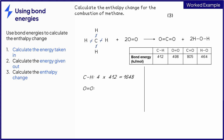The equation indicates there are two molecules of oxygen, so there are two oxygen-oxygen double bonds. Multiply this number by the bond energy in the table, 498, to give you 996. Add these values together to find the total energy required to break the bonds. This gives you a total value of 2,644 kilojoules per mole.